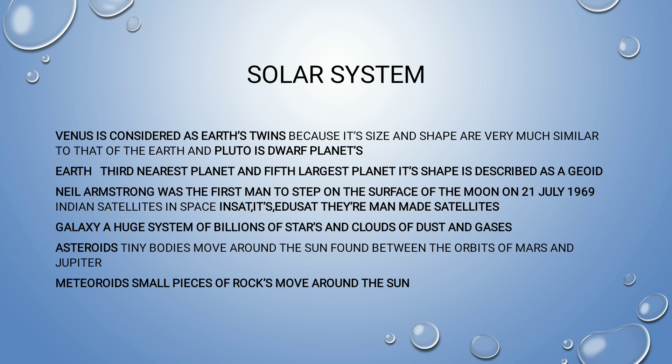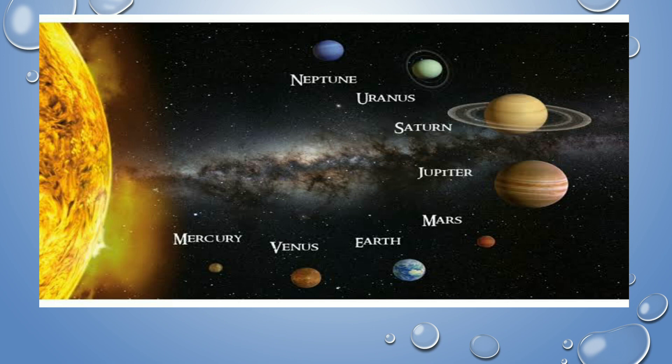We will now move on to latitudes and longitudes, but first let's see the pictorial representation of the solar system. The central part is the Sun, then Mercury, Venus, Earth, Mars, Jupiter, Saturn, Uranus, and Neptune. All these planets revolve around the Sun in a fixed path in an elliptical manner.